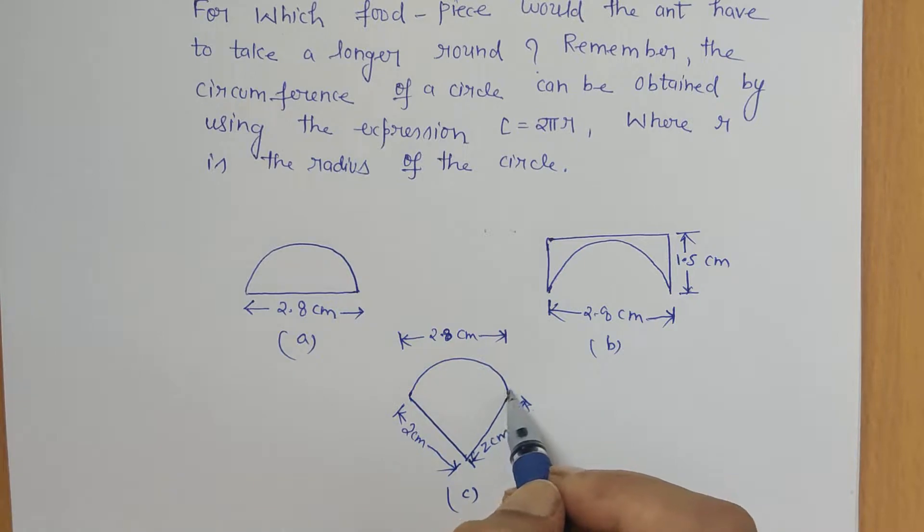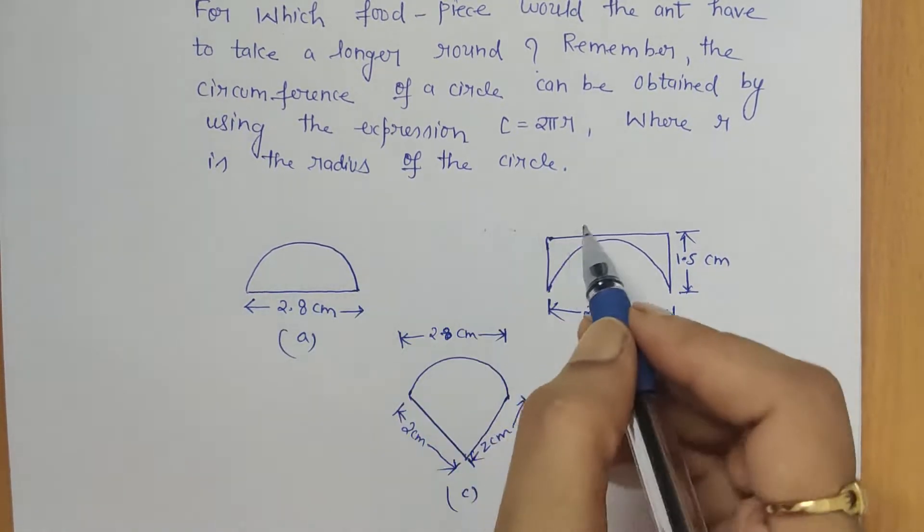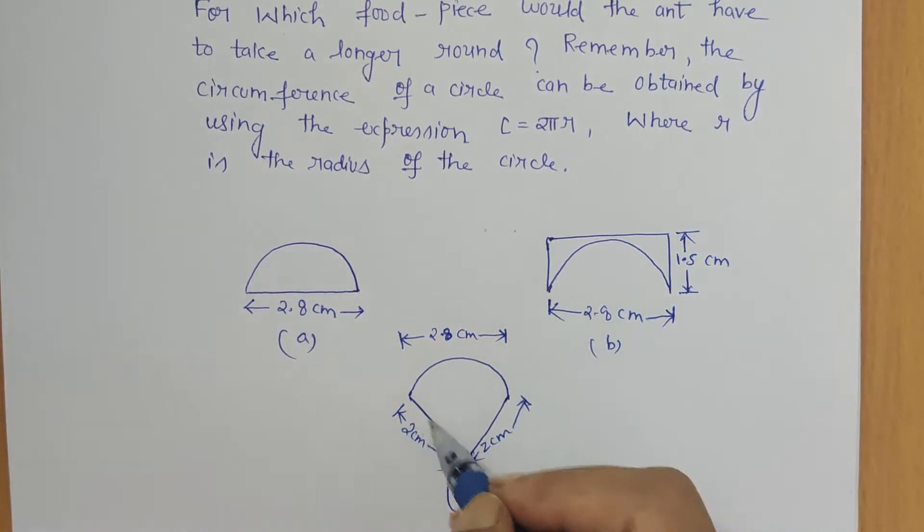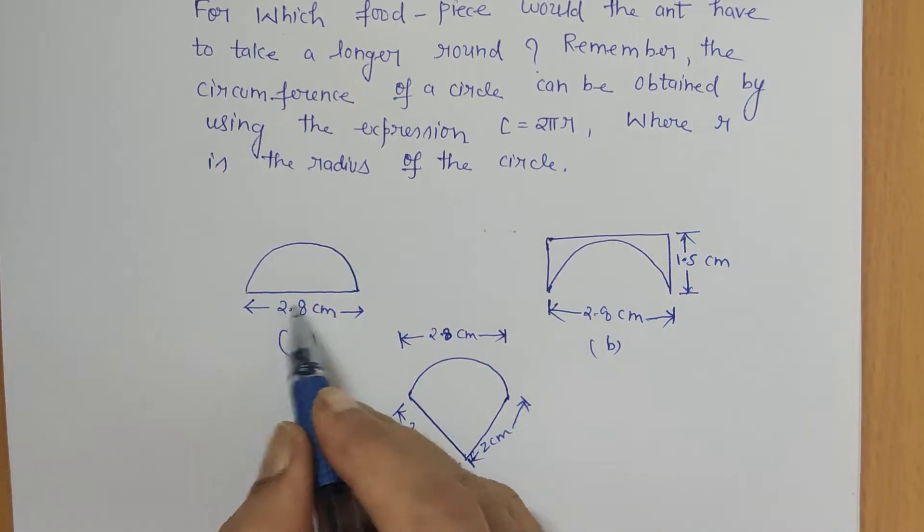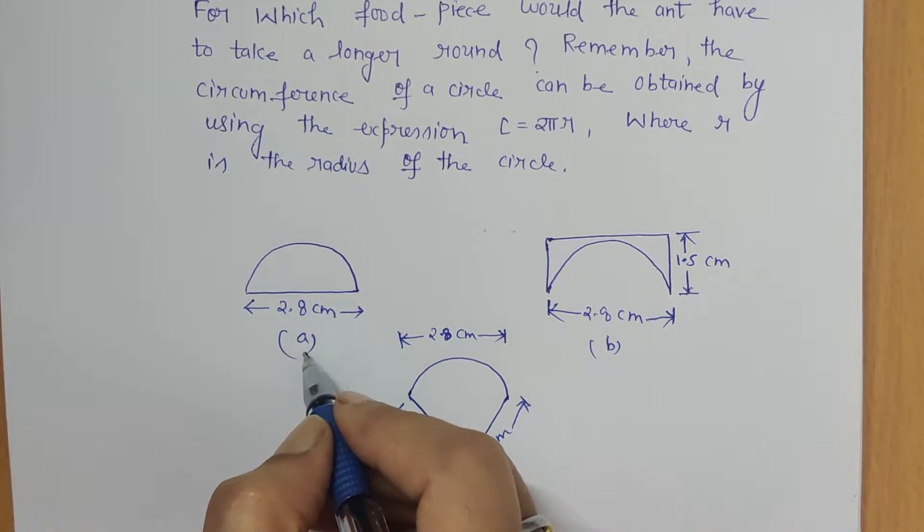Half of 2πr, and the rest of the things which we see along the path of the ant is a straight line, so we just have to add the length as it is. So let's calculate the length traveled by the ant.